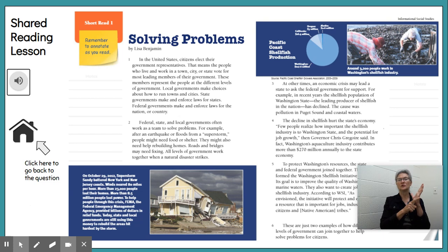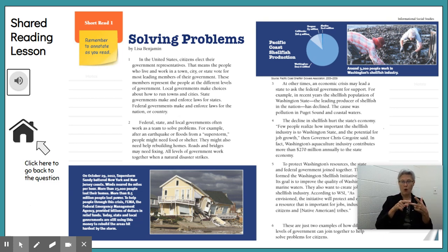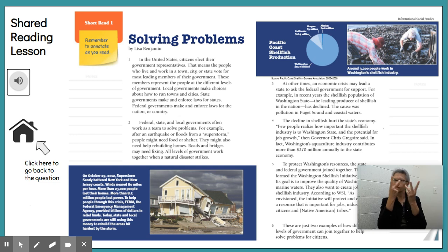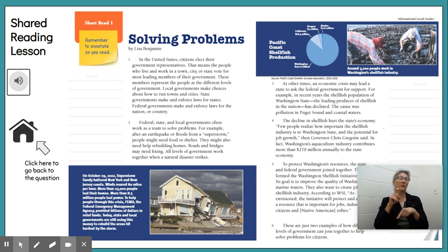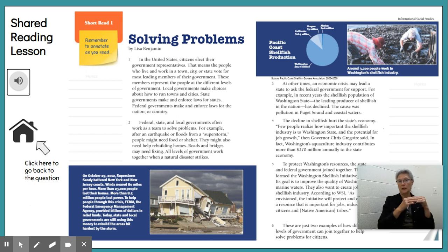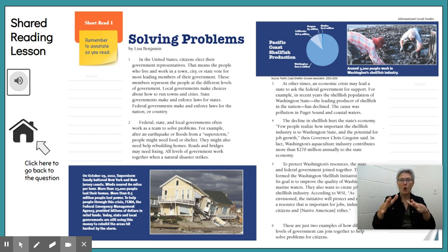Federal, state, and local governments often work as a team to solve problems. For example, after an earthquake or floods from a super storm, people might need food or shelter. They might also need help rebuilding homes. Roads and bridges may need fixing. All levels of government work together when a natural disaster strikes.